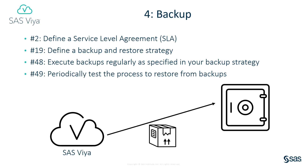Restoring different parts of the deployment using backups taken at different times would leave the deployment in an inconsistent state. Good, frequent backups are also essential to disaster recovery, though of course they do not provide disaster recovery capability on their own. Tasks 2 and 19 address some of those topics. The checklist also has regular tasks 48 and 49 to execute backups and periodically test the restore process. After all, backups are only reliable if you know you can successfully restore from them.